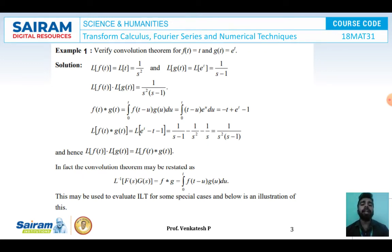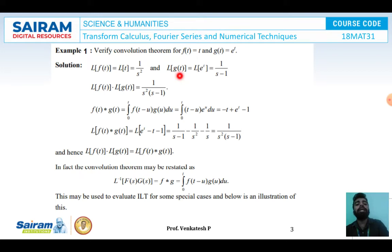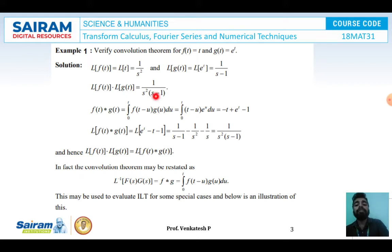The Laplace Transform of f(t) is equal to 1 by s squared. Similarly, the Laplace Transform of g(t) equals the Laplace Transform of e^t, that is 1 by (s minus 1). Therefore, the Laplace Transform of f(t) into the Laplace Transform of g(t) equals 1 by s squared into (s minus 1).